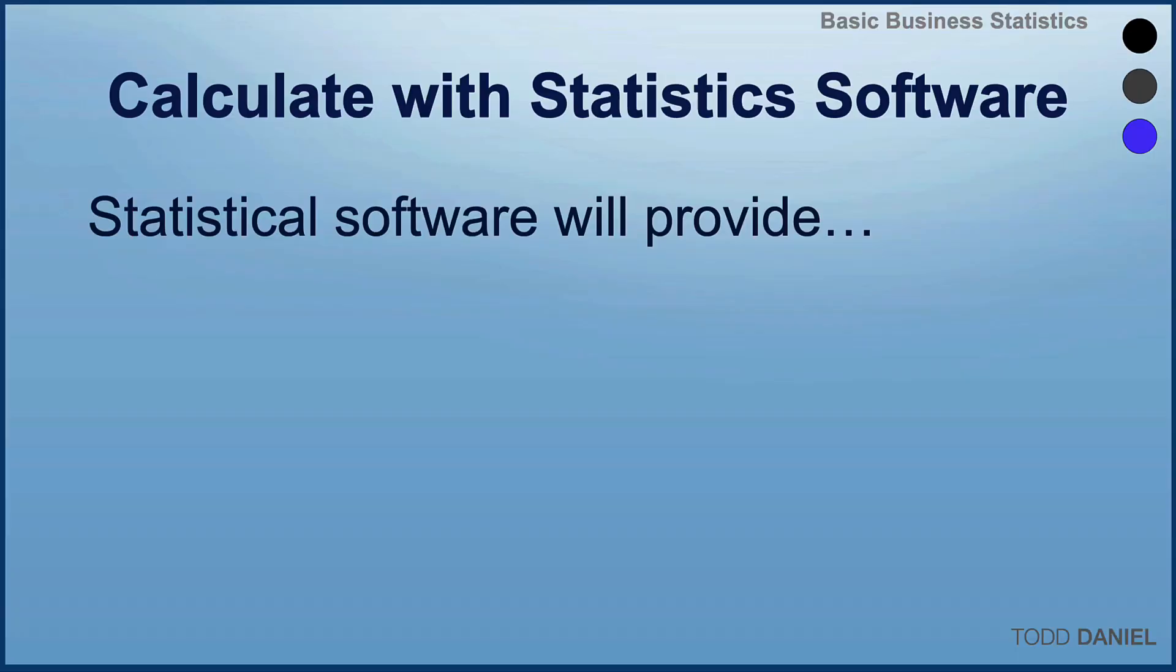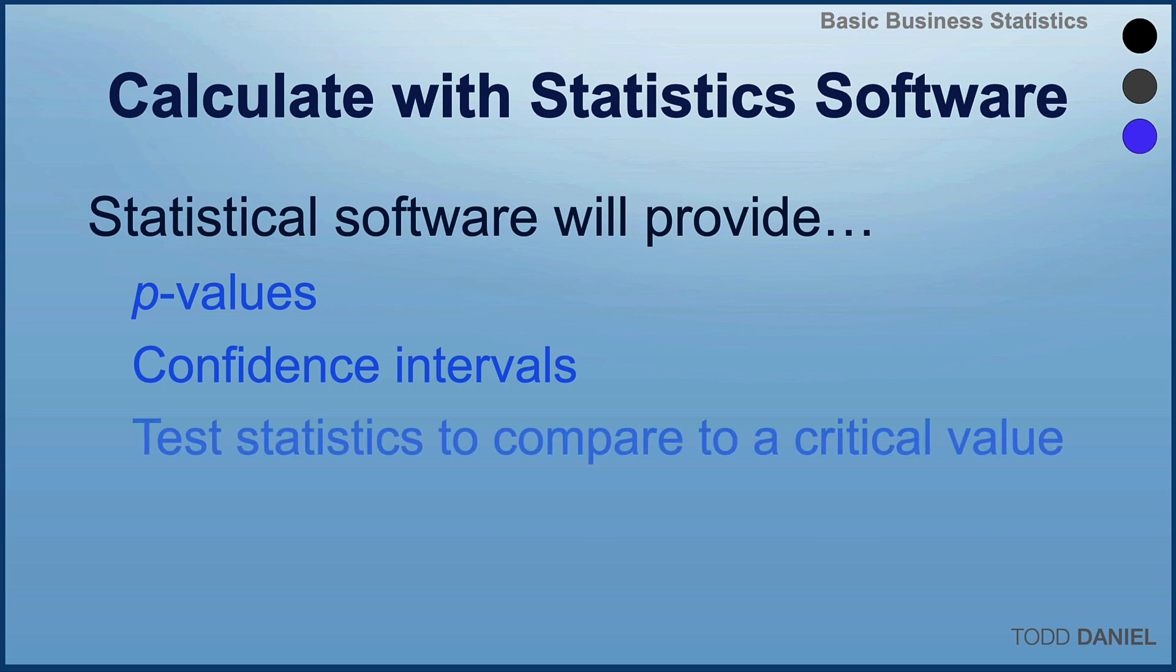No matter which statistical program you learn, each one will give you three things that we need to determine statistical significance: P values, confidence intervals, and a test statistic that you could then compare to a critical value. If you're going to use a critical value, you will need to look up that value in a table of critical values. I will be providing such tables at the back of your course notes. I will also have Excel spreadsheets that you could use to directly calculate a critical value.